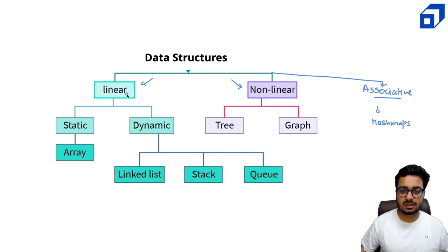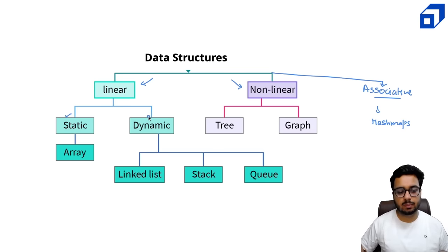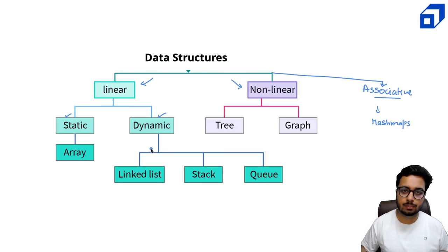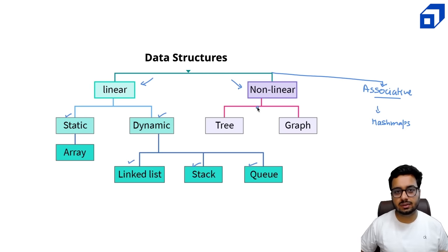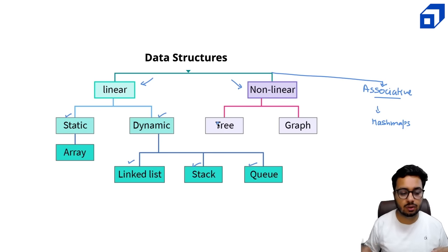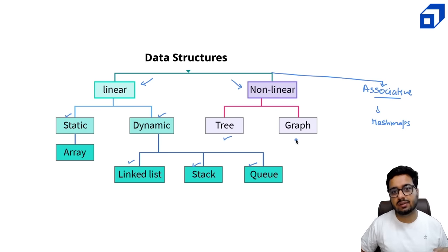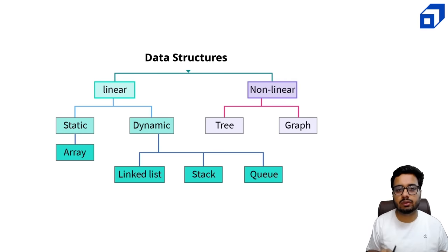Linear data structures can be of fixed size like a fixed-size array, or they can be dynamic — meaning they can grow and shrink in size — for example, ArrayList, LinkedList, Stack, and Queue. In non-linear data structures, we might have data structures with a hierarchical structure, for example trees, or data structures with a network-like structure, for example graphs. This is a very high-level overview of how data structures are classified.